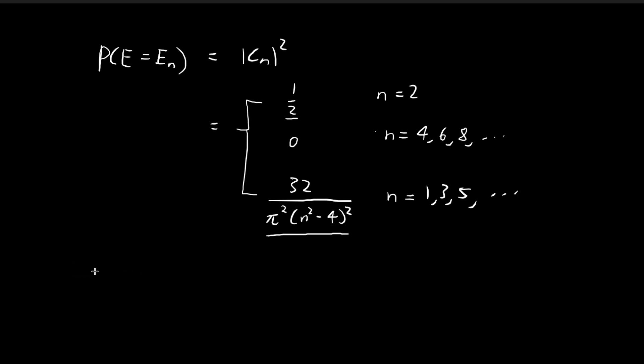The next most probable energy level will be obtaining the first energy level, so when n is equal to 1. The corresponding probability is equal to c1 squared, which is just substituting 1 into this formula. So we have 1 minus 4 squared, so it's just 9. The probability is equal to 32 over 9π squared. This is the second most probable energy level and this is the associated probability.